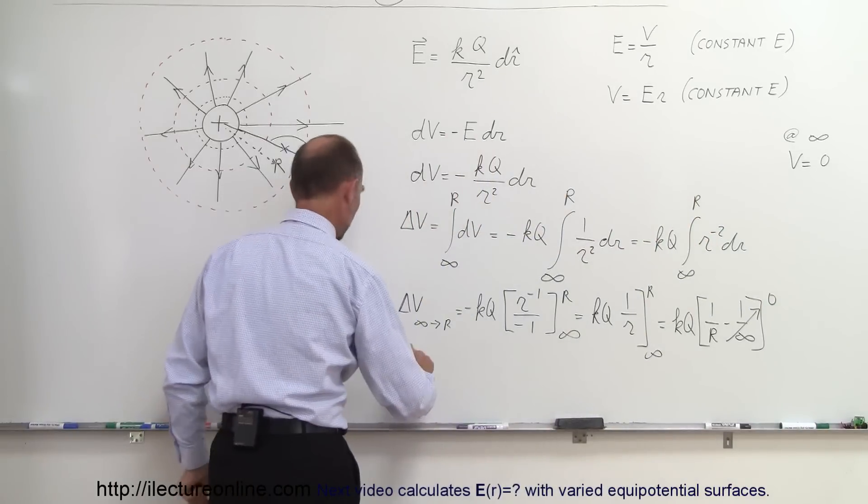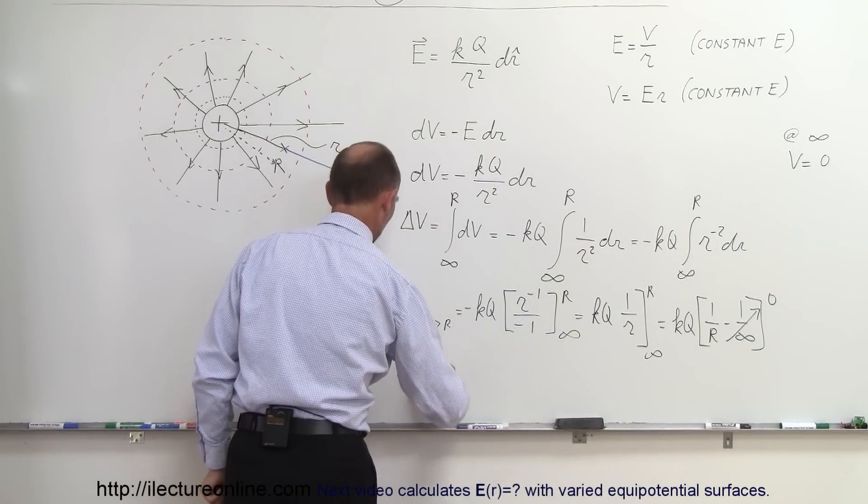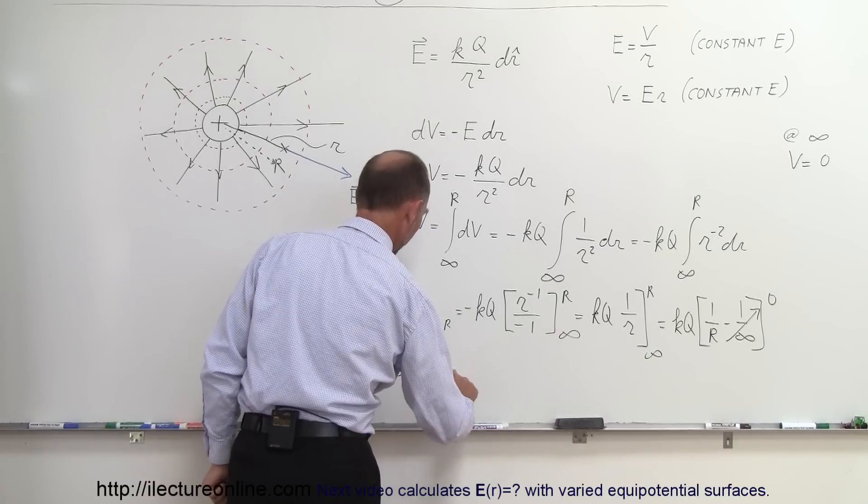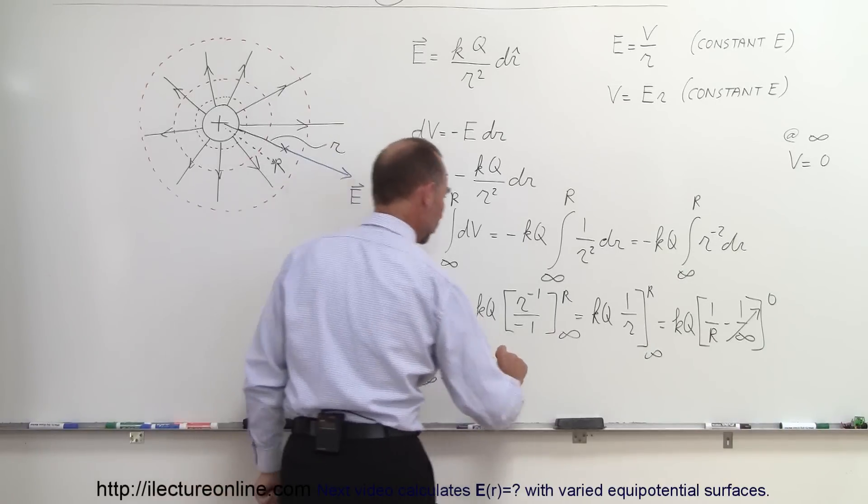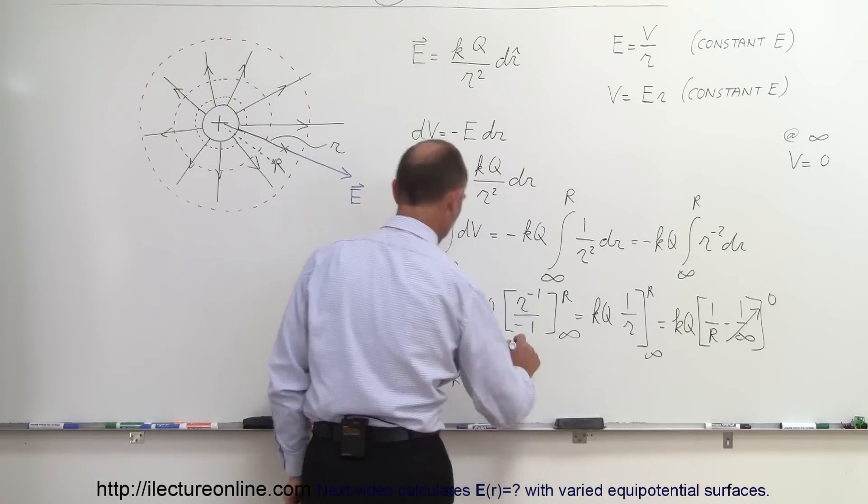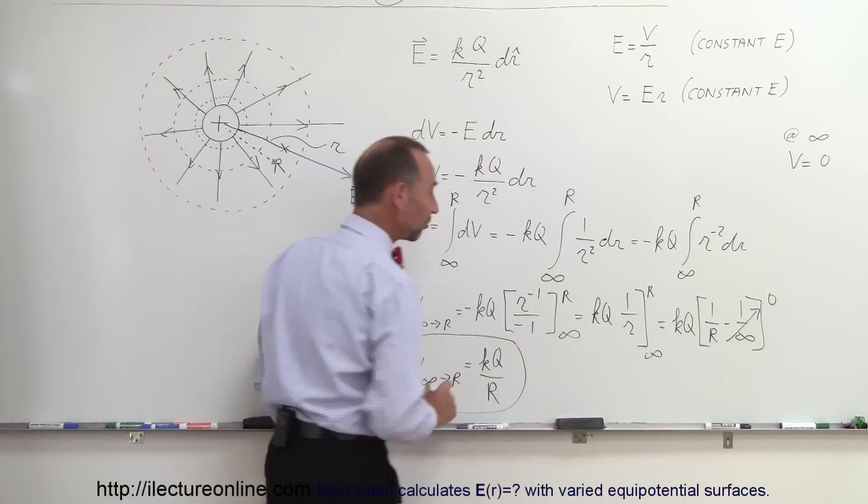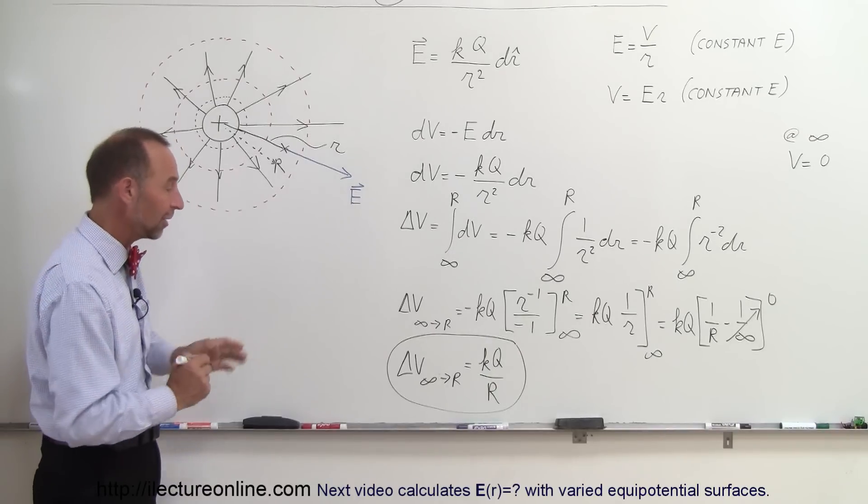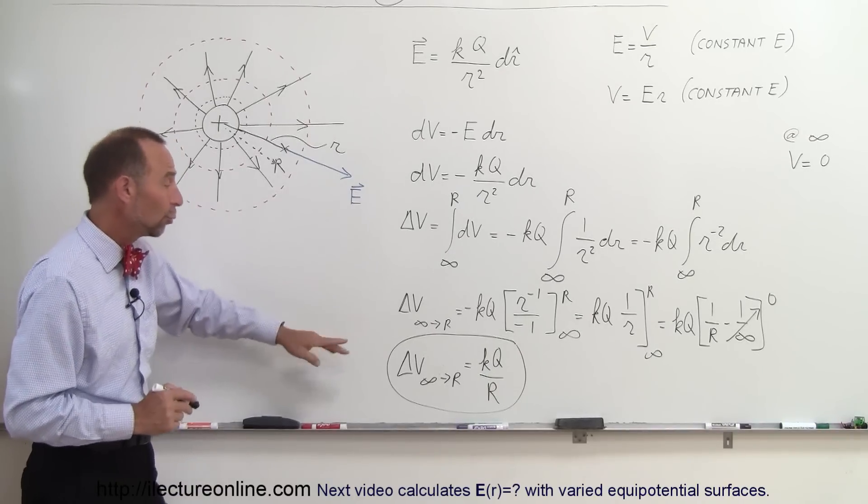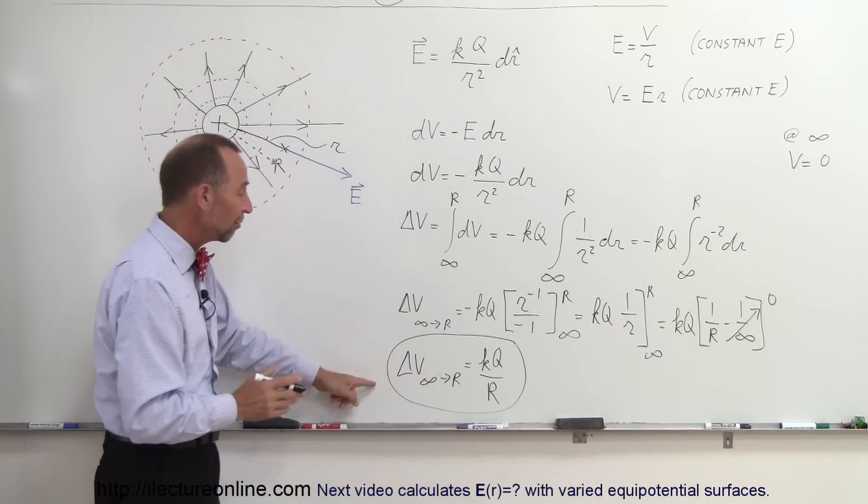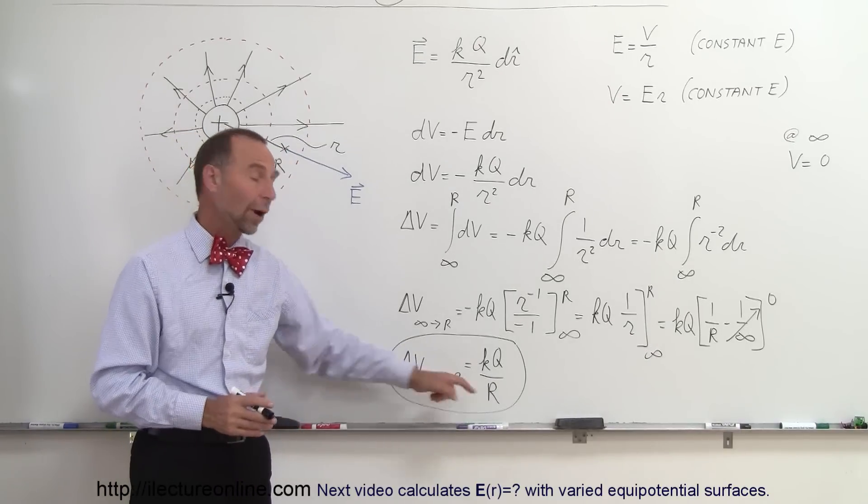Finally we can say that the change in potential when we go from infinity to some position R is equal to KQ over R, and of course you recognize this as the general equation of the potential around a point charge. The reason why I went through this exercise is to show you how this really represents that the certain potential will be a function of a certain distance away.